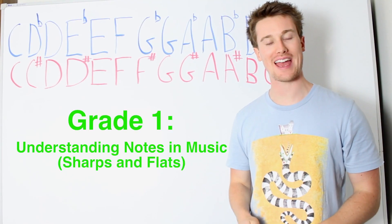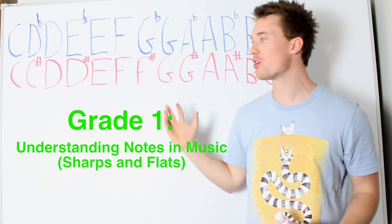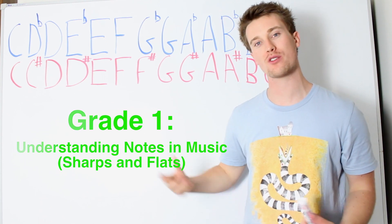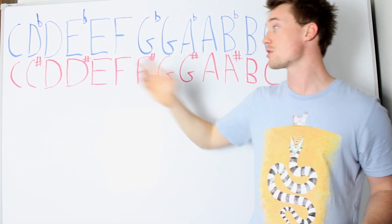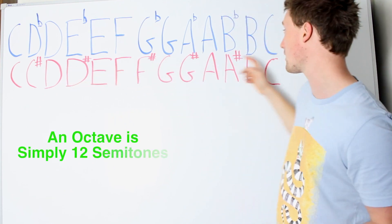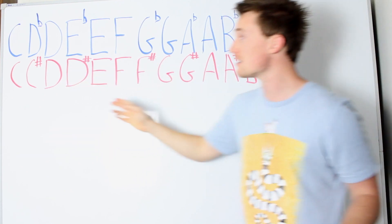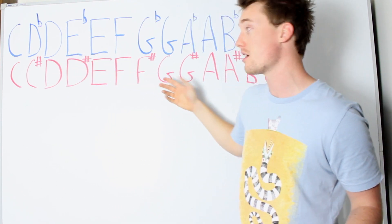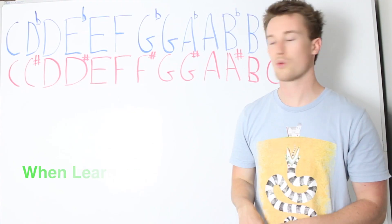Hey everyone, so today we're looking at understanding what notes can be found on a guitar, or really what notes can be found in western music. Starting from a low C and going an octave higher to another C, I've written the order of semitones that you will find on a guitar, or really any western instrument.